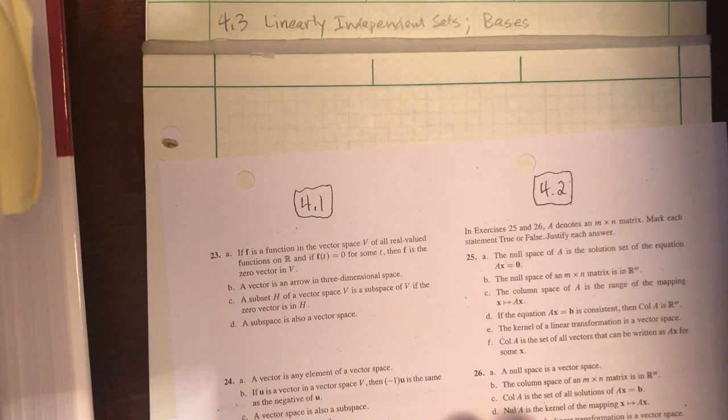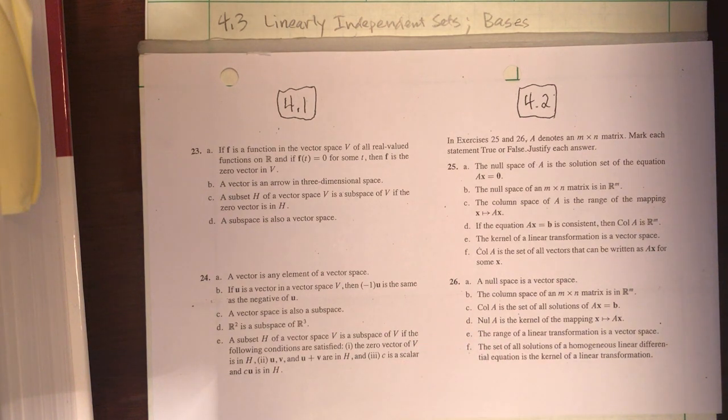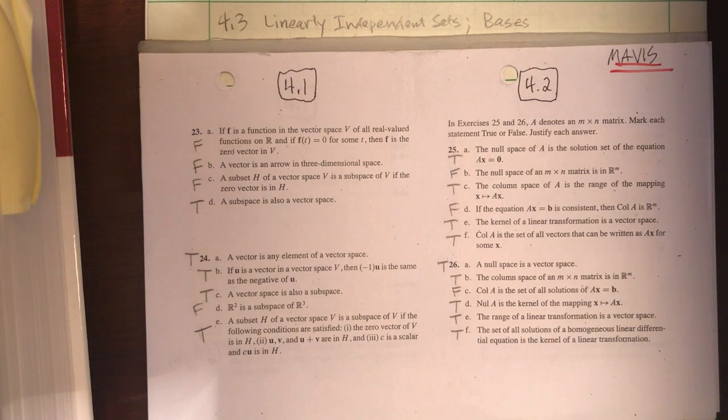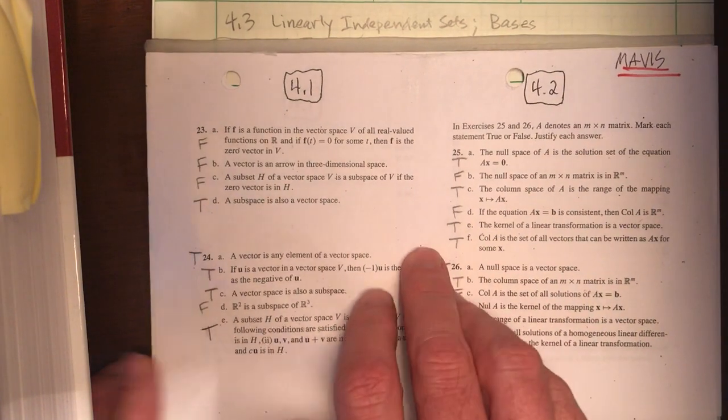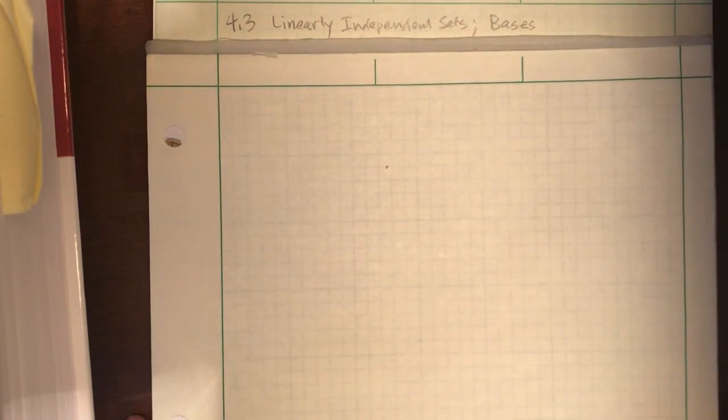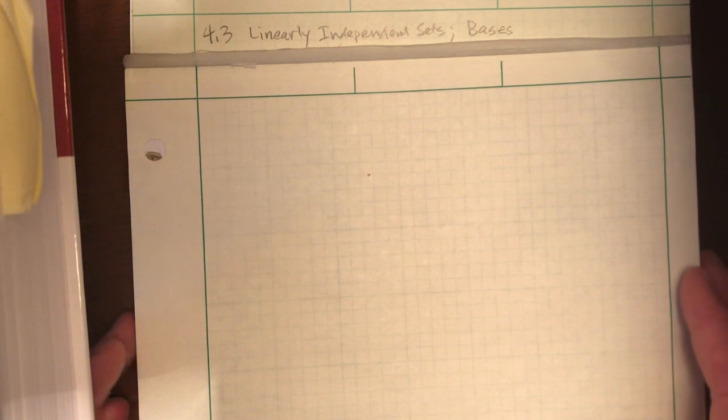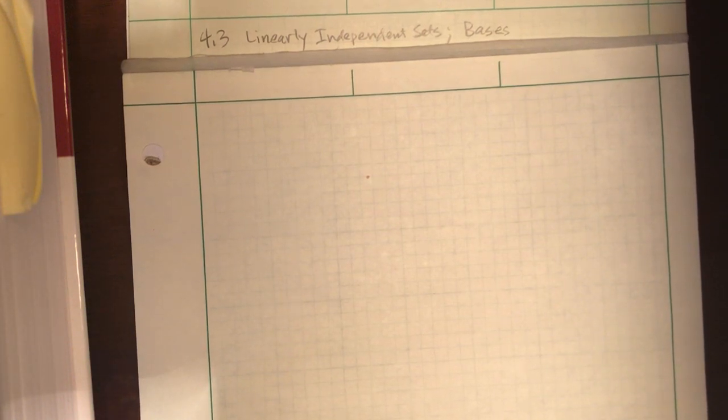Before we start Section 4.3, I wanted to share with you some true-false questions that came from Sections 4.1 and 4.2, like we've done many times in the past. I'll give you a moment to pause, capture that, screenshot it, and here come the answers that you'll want to refer to after you've considered each question first. All right. So, Section 4.3, what do we've got here? Linearly Independent Sets and Bases. Bases is the plural for the word basis, which we will talk about today.